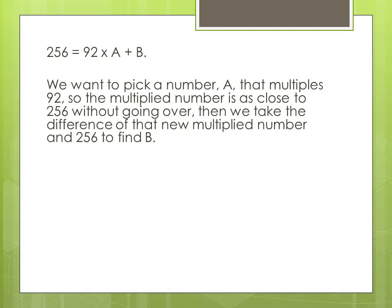Now we take this form and find the integers a and b. First we want to pick a number a that multiplies 92 so the multiplied number is as close to 256 without going over. Then we take the difference of that multiplied number and 256 to find b.